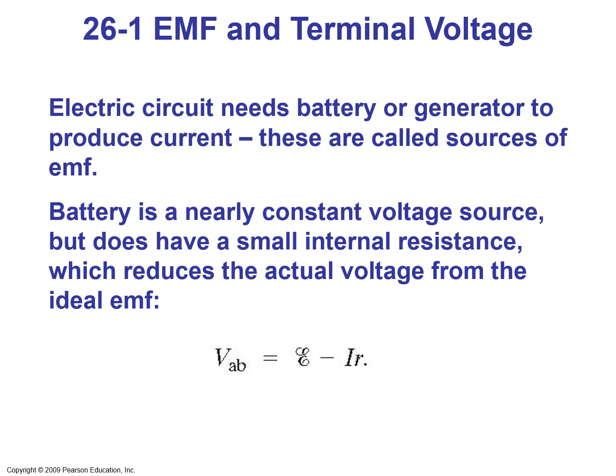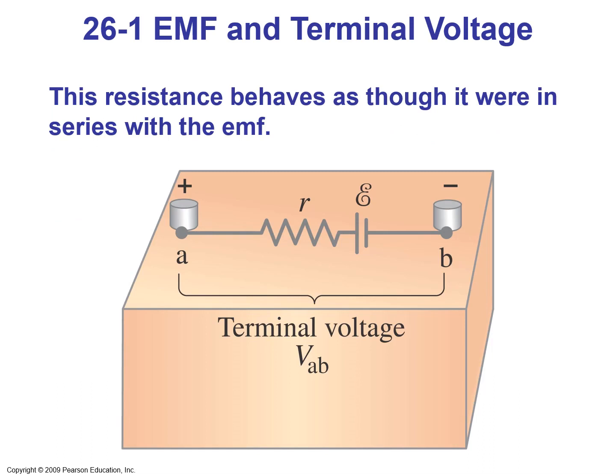We describe the voltage between the terminals of the battery as script E, which is the ideal EMF minus IR, where R is the internal resistance of the battery. This resistance behaves as though it were in series with the EMF. Here is a diagram showing the voltage difference between the terminals of the battery, VAB.